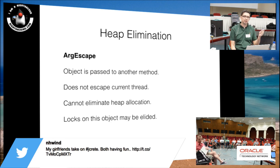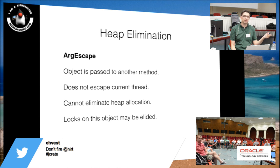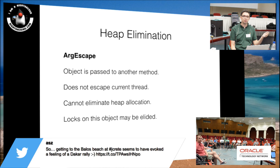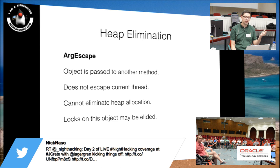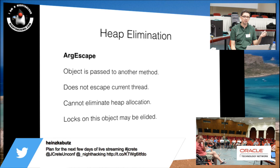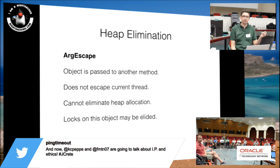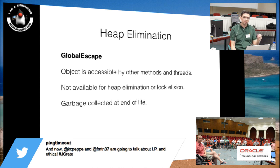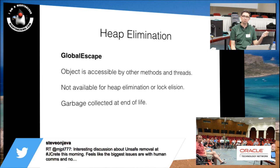If an object does escape the current method — for example, you create a local object but pass it to another method as an argument — it can't be heap eliminated. But escape analysis can still elide the locks: if a local object is created on a thread and the VM can identify it as not being used by any other threads, then that lock can be elided. Finally, objects which do escape the method or are accessed by other threads are classified as global escape, and no optimizations can be made — they are allocated on the heap and must be GC'd at the end of their life.